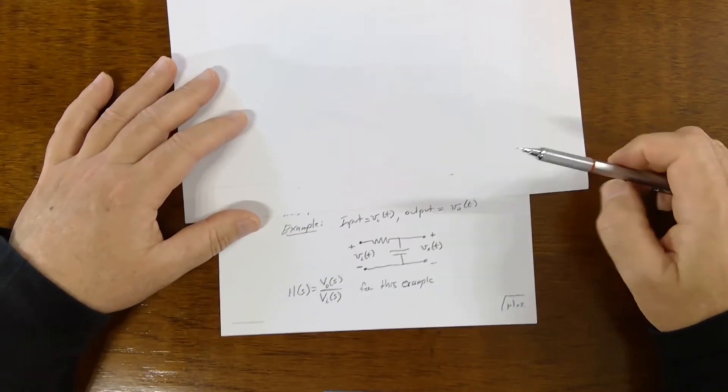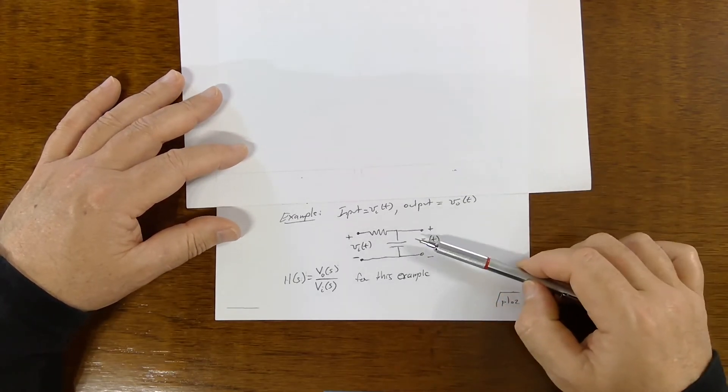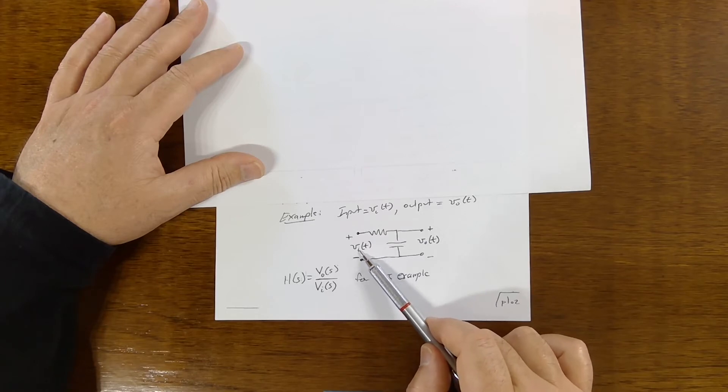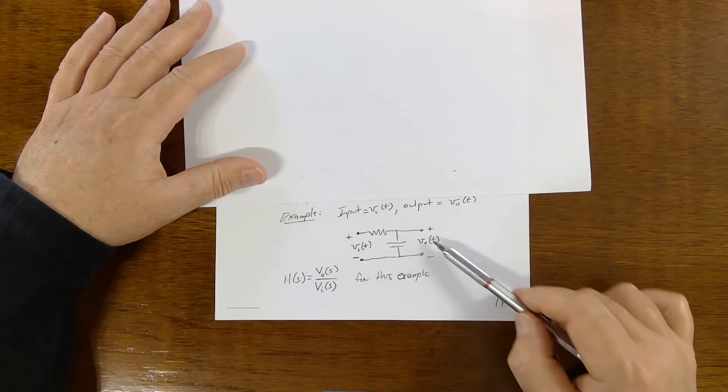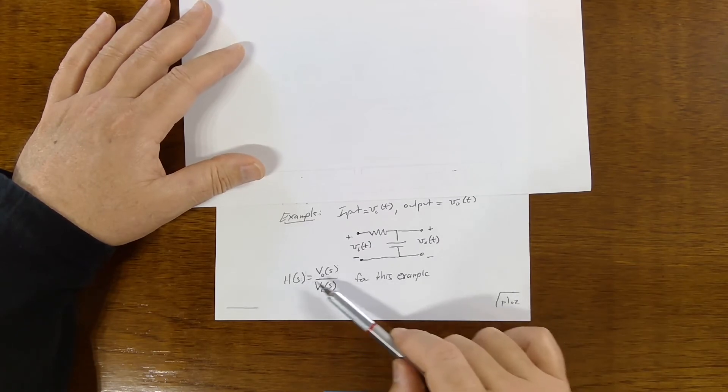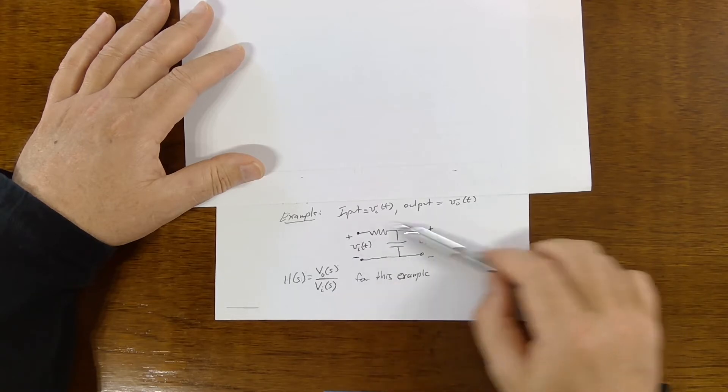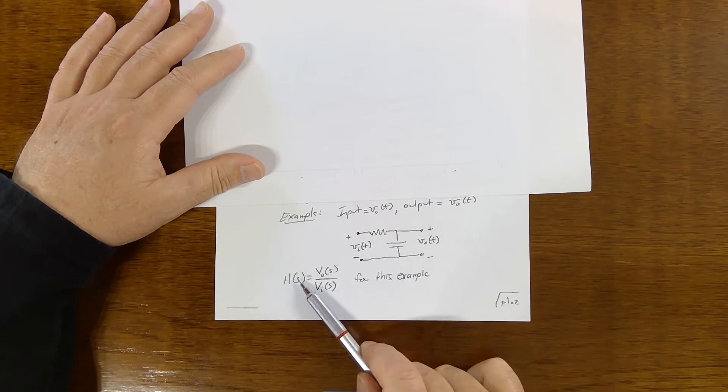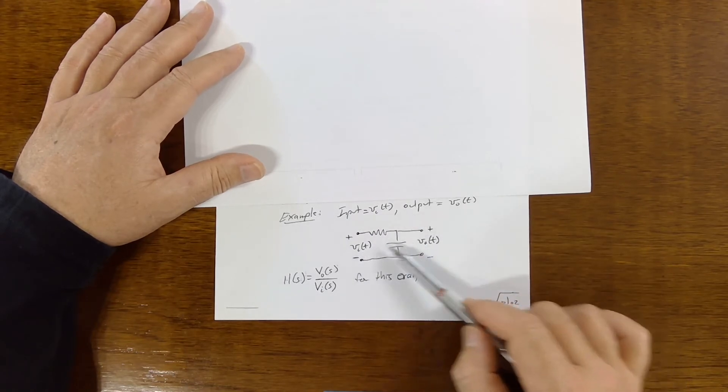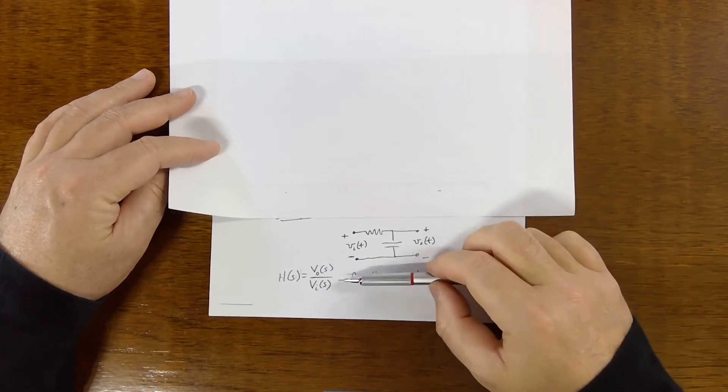Here's a simple example just to understand this concept. We've got a time domain circuit here. V sub I is the input voltage, the input signal, which happens to be voltage. And V zero of T is the output signal, which happens to be voltage. And the transfer function H of S would be the frequency domain equivalence of these two time domain signals. So it'd be V zero of S over VI of S for this particular example. Transfer function is just some chosen output signal over some chosen input signal.